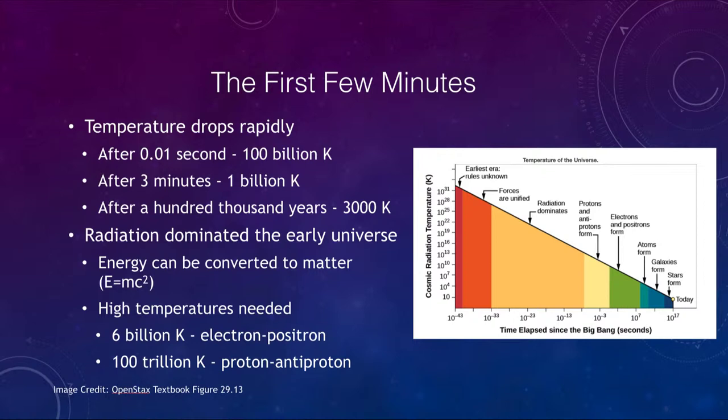Let's look at what was going on in the very earliest part of the universe. The temperature must have dropped very rapidly: from a hundredth of a second after the Big Bang being 100 billion Kelvin, after three minutes dropping to just 1 billion Kelvin, and then after just 100,000 years — a very short time compared to the 14-billion-year age of the universe — it was down to 3,000 Kelvin.